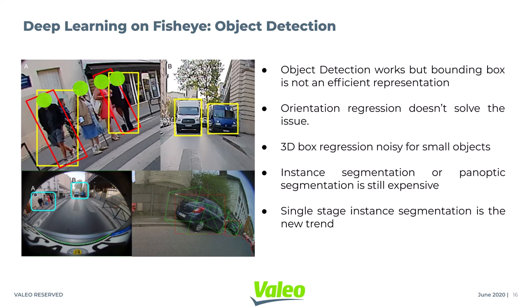A common idea is to orient the boxes. In the case of the gentleman on the left side of the image, this orientation concept works, as the box with optimal orientation is also the box with optimal IOU with the ground truth. But for the gentleman in the black suit, the optimal orientation box is not the box with optimal IOU. Simple orientation works in some cases but does not solve the problem. 3D boxes work, but annotating and inferring a 3D box is a noisy process for small objects. A full-fledged solution is instance segmentation, and we are seeing single-stage instance segmentation techniques becoming popular.